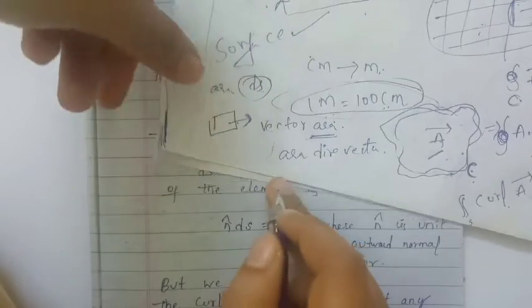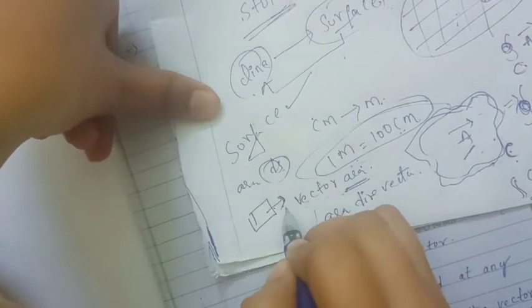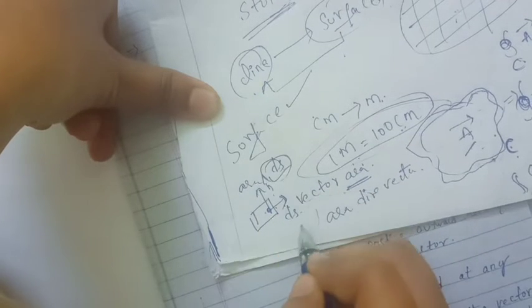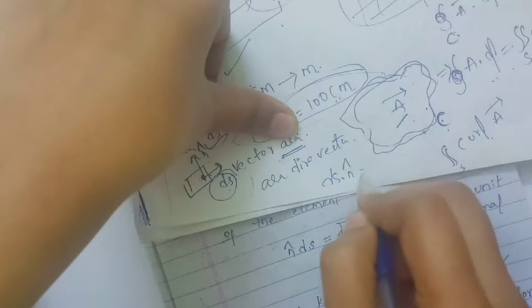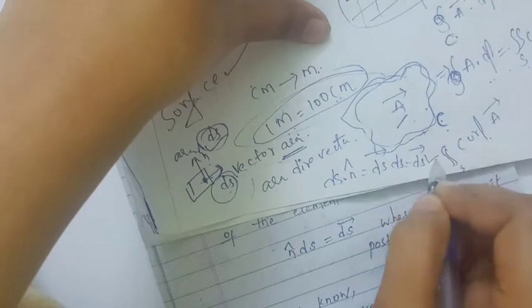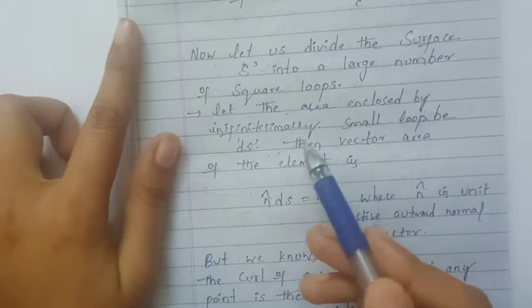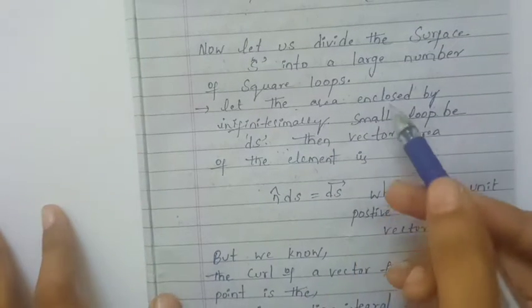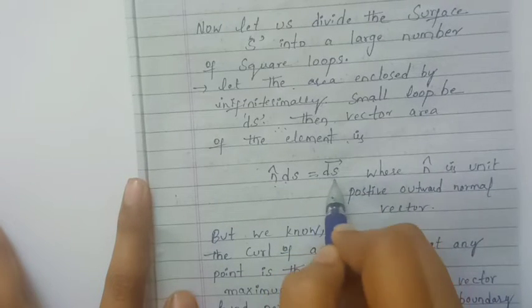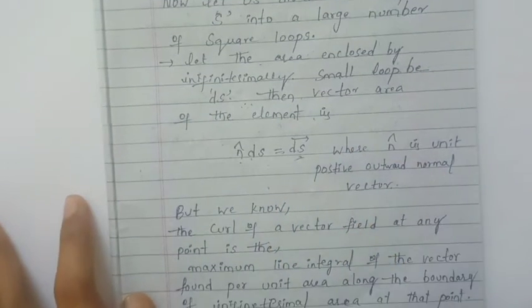Now dS is the vector area. For each small area dS, we assign a unit normal vector n-cap perpendicular to the element. The vector area of the element is defined as dS-bar, where n-cap is the unit positive outward normal vector, so dS-bar equals n-cap times dS.